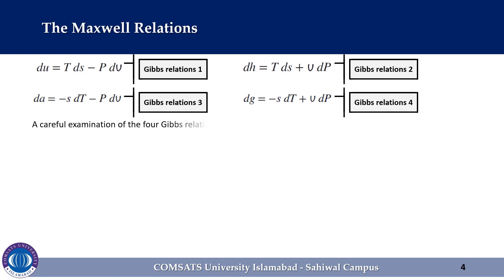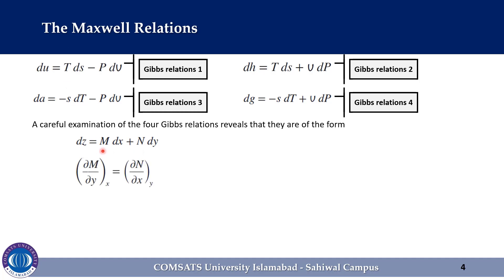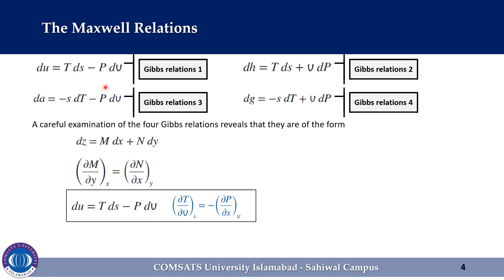A careful examination of the four Gibbs relations reveals that they are of the form dZ is equal to M dx plus N dy. As we already discussed in the previous lecture, we can write it as: partial M over partial y while x is held constant, is equal to partial N over partial x while y is held constant. Since u, h, A, and G are properties and thus have exact differentials, applying the above expression we can write these equations.